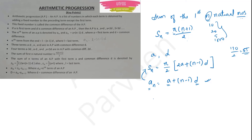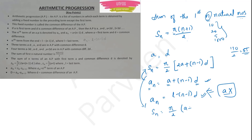We also have another formula for sum: if you don't have the common difference but have the last term l, use Sn = n/2 × (a + l). So we have four formulas so far: two for finding An (one using a and d, another using the end term l), and two for finding Sn (one using a and d, another using a and l).